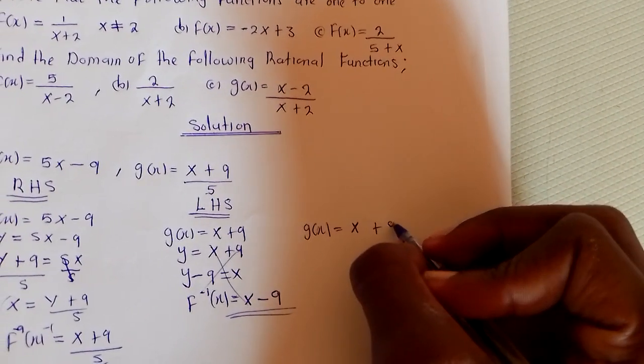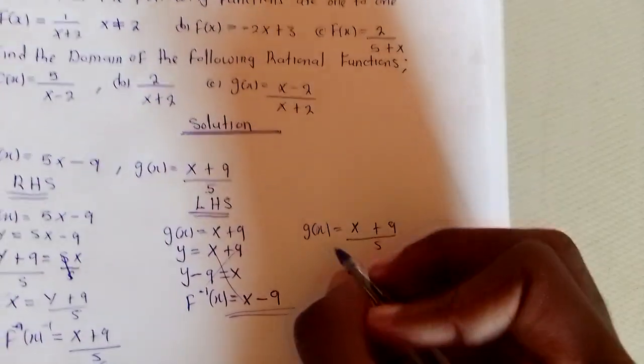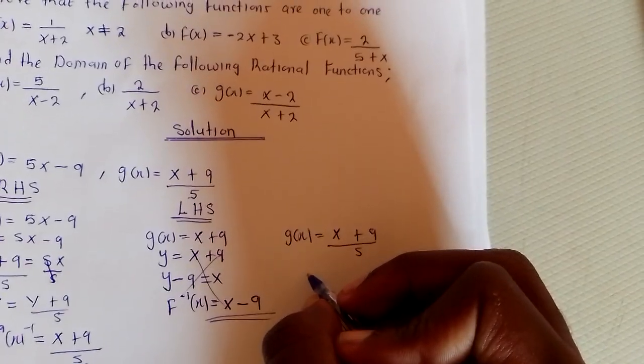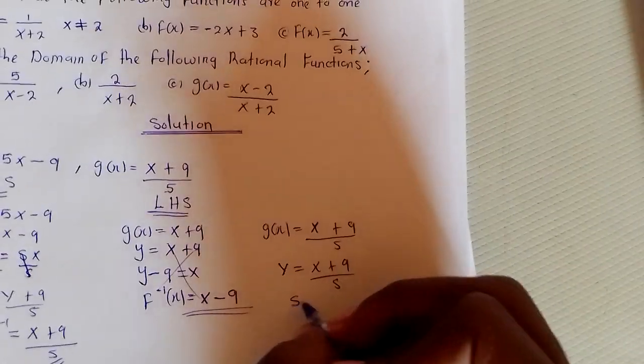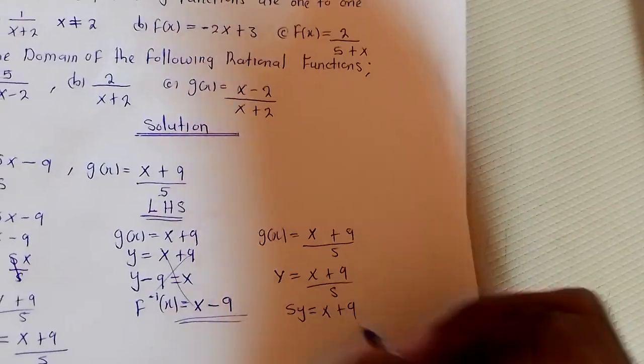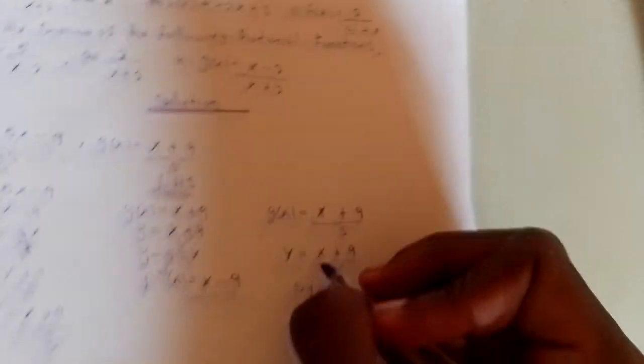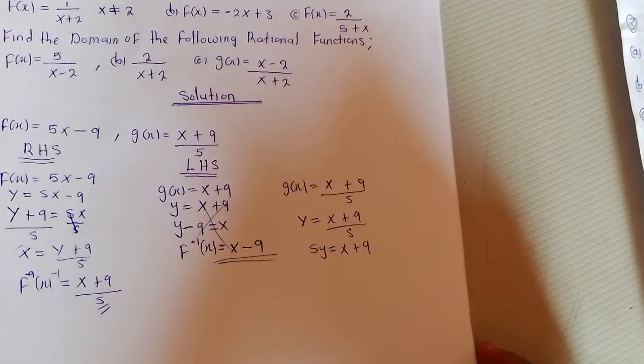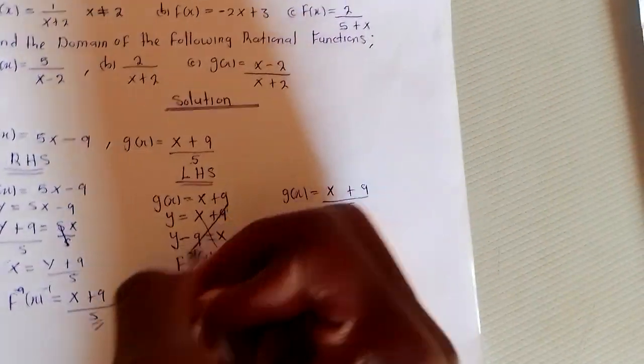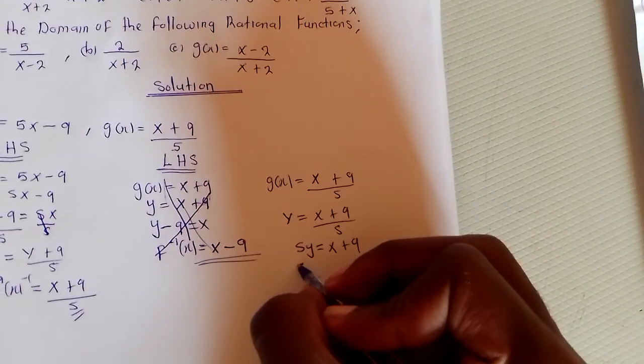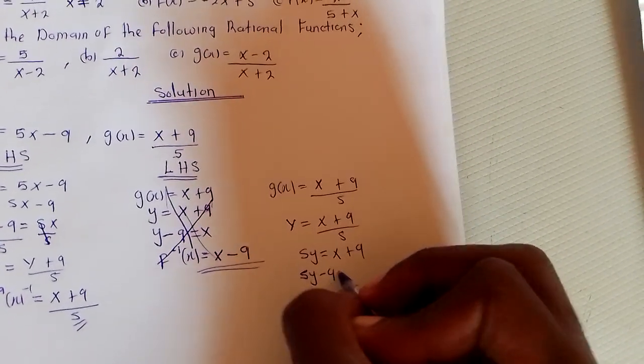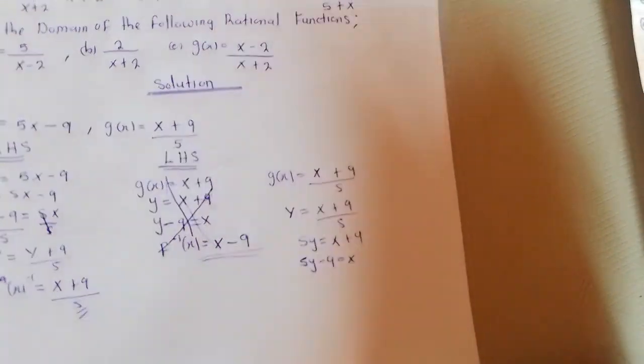So 5y = x + 9. We make x the subject, so x = 5y - 9.